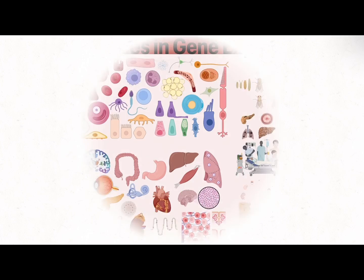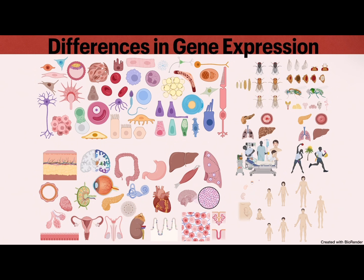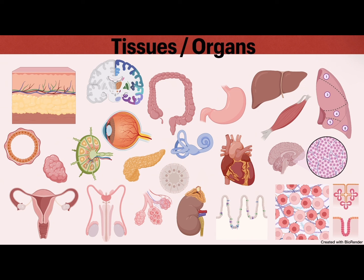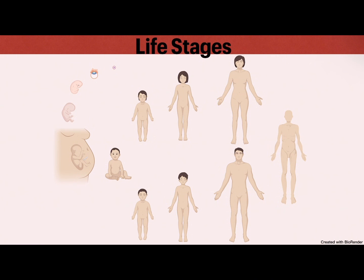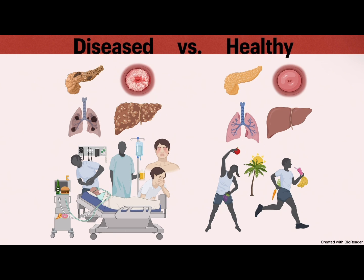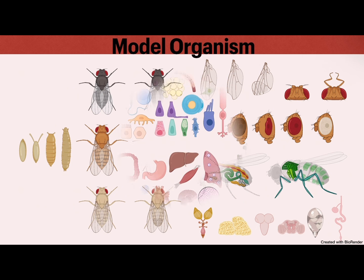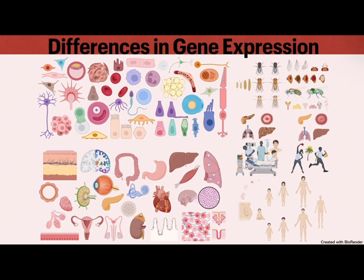We can attribute much of our ability to adapt and develop throughout generations and changing conditions to alternative splicing. The majority of genes are designed to produce alternative transcripts, which can be found in various cell types, tissues, organs, life stages, sexes, conditions, phenotypes, and species. Just think of all that biodiversity — and it's almost all thanks to splicing!